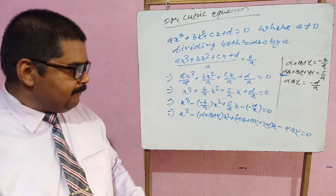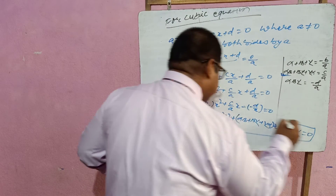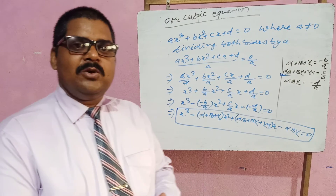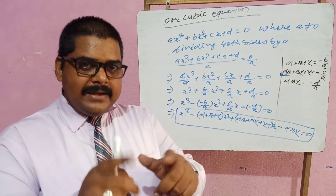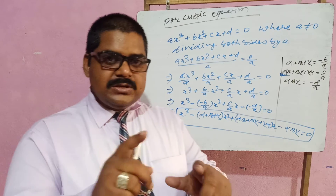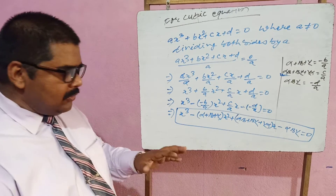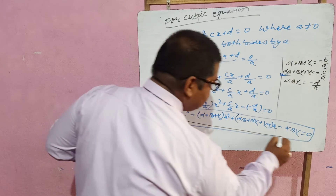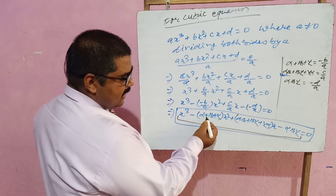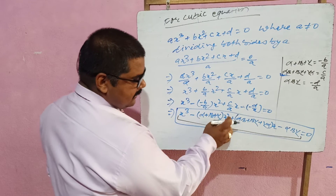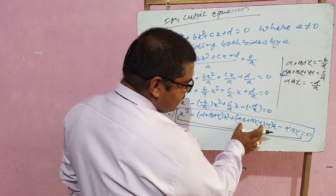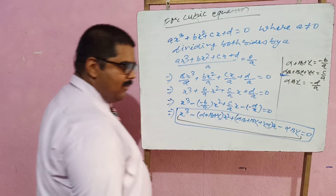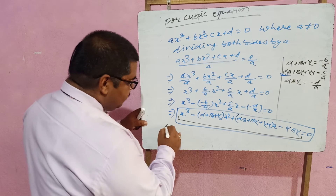This is the formula used when zeros are given and you need to find the cubic equation. For a cubic polynomial, you write up to: x³ − (alpha + beta + gamma)x² + (alpha·beta + beta·gamma + gamma·alpha)x − alpha·beta·gamma, where alpha, beta, and gamma are the three zeros.